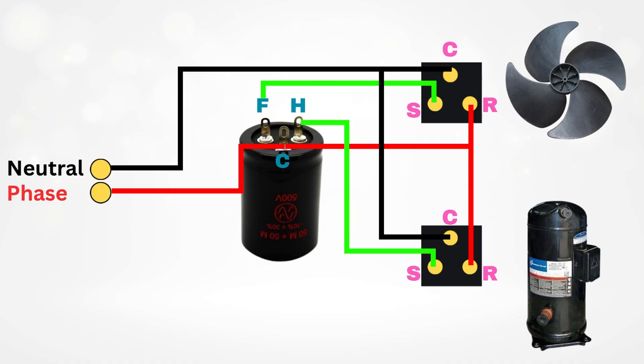This stored energy gives both motors the boost they need to start spinning. After the motors start running, the capacitor's work is mostly done. It drops out of the circuit, and now the AC system continues to run with the normal phase current supplying the motors through their run windings.